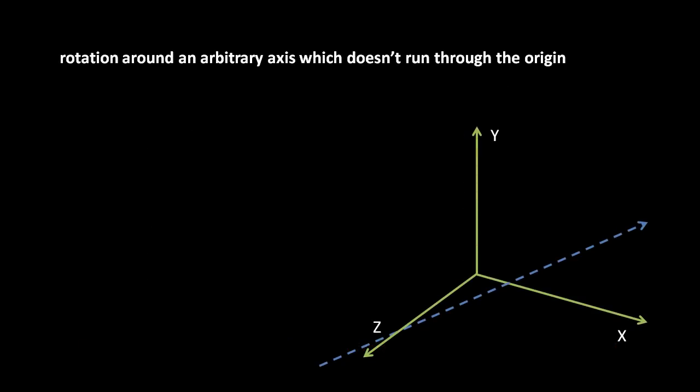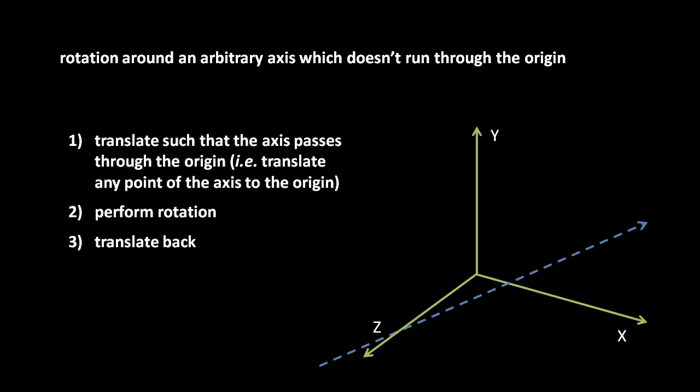Now that we can rotate around an arbitrary axis running through the origin, what about rotations around axes not running through the origin? Well, the solution is very simple, and similar to the trick we used in 2D to rotate around pivots other than the origin. Once again, we temporarily change the frame of reference, this time translating the line so that it does pass through the origin before performing a rotation, and then translating back. We first select any point on the line, we then find the vector from that point to the origin, and this vector is the translation we perform to temporarily change our frame of reference.